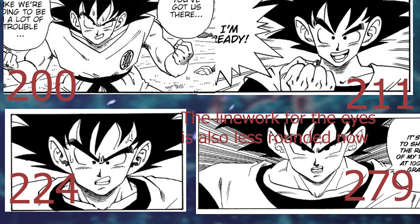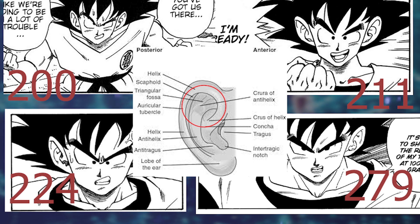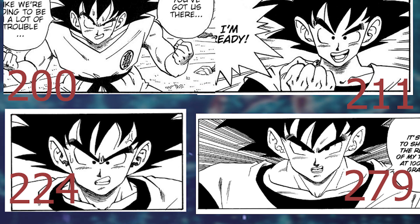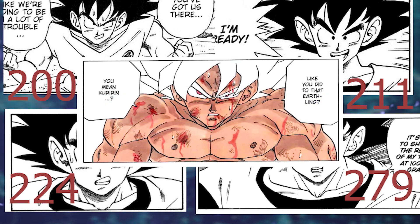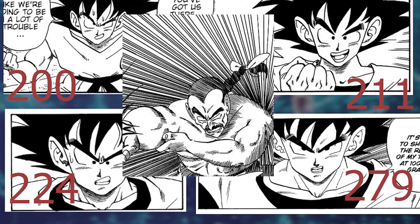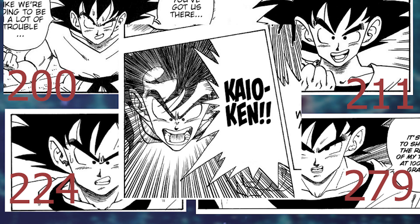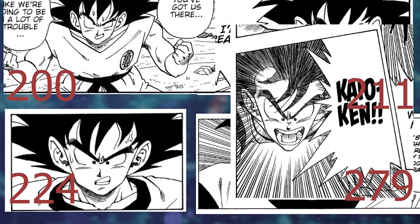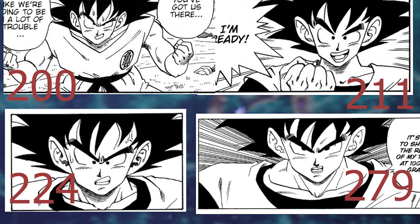In regards to the anatomy of the ear, the anti-helix sat quite a distance from the helix in earlier chapters, whereas now it is placed higher and more realistically. There are also several pen strokes above his eyebrow adding extra expression as the muscles slightly contract — a feature we'll see more consistently later in this arc. Oddly, looking back at earlier chapters, Toriyama did draw this, but more so for villains like Vegeta and Nappa. Even when Goku was expressing rage he usually wouldn't draw it, but later on that changes.